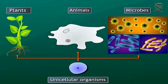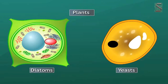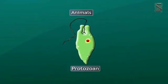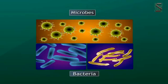Unicellular organisms can be found everywhere. Like? Plants like diatoms and yeasts, animals like protozoa and microbes like bacteria.